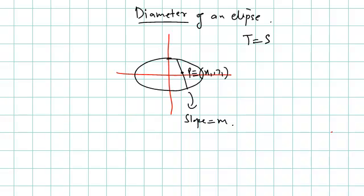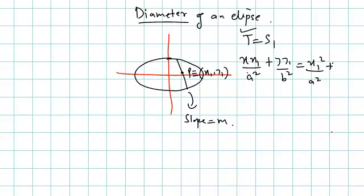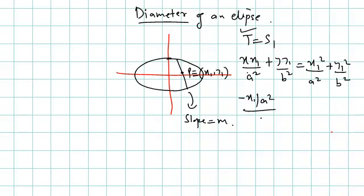If we know the midpoint of a chord, we apply the formula T = S₁ to find the equation of the chord whose midpoint is (x₁, y₁). For an ellipse, this is: xx₁/a² + yy₁/b² = x₁²/a² + y₁²/b². Now, since the slope is constant at m, and slope equals minus the coefficient of x divided by coefficient of y, we get: slope = (−x₁/a²) / (y₁/b²) = m.